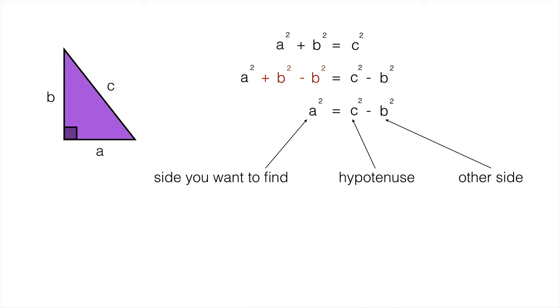if we want to find b², well that's the side we want to find, so that would be b². And that will be equal to the hypotenuse which is c² minus a².